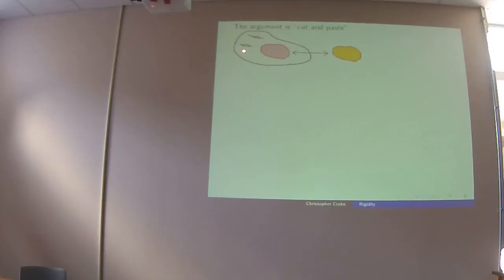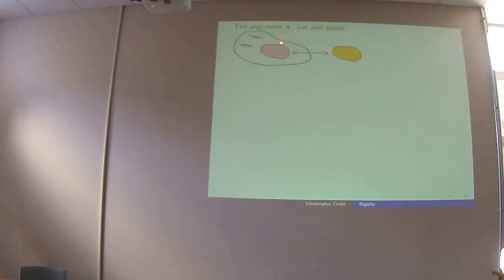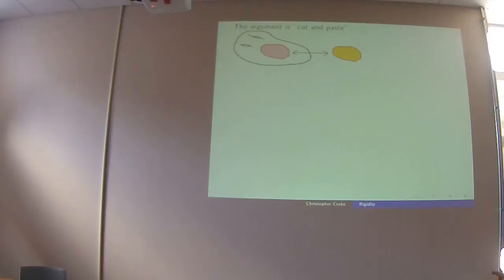Here's the argument: take your conjugacy-rigid manifold, take a simple subdomain, cut it out. Assume you want to prove boundary rigidity. Take another manifold with the same boundary distance function, hence the same lens data, hence a conjugacy of geodesic flows between the two pieces. Cut one piece out, paste the other in — now you have a new manifold conjugate to the old one, which is conjugacy rigid, so it's isometric. Hence your little piece was isometric to the original piece.